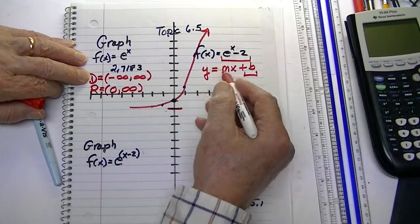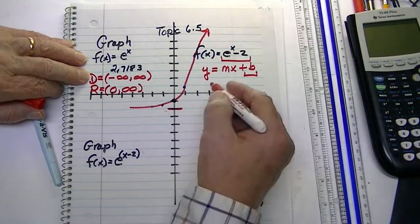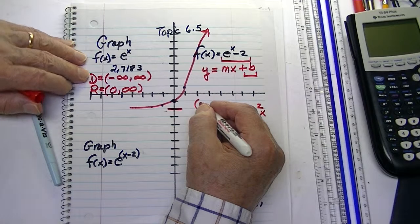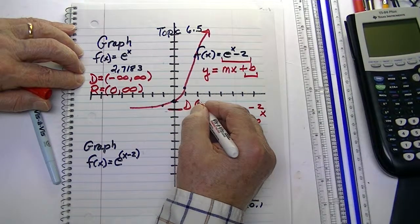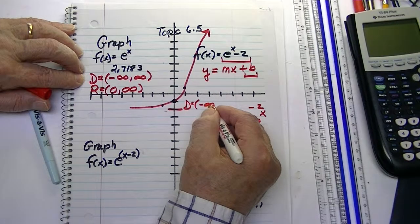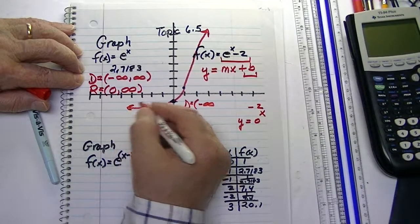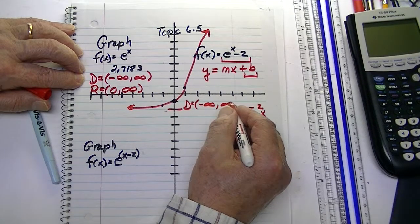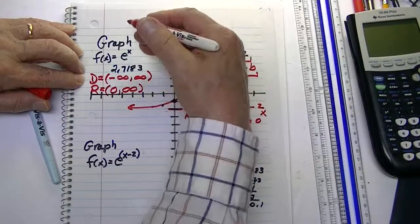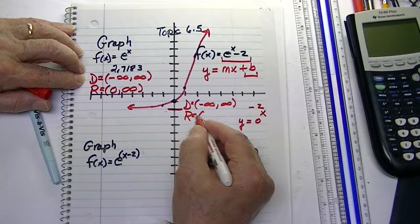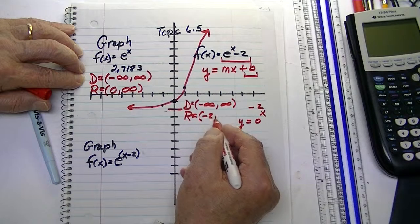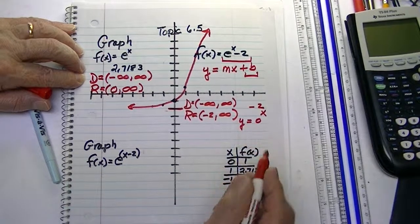So, what will be the domain of this one? Well, the range, let's just do domain first. Domain is going to equal from, again, negative infinity, because this goes on, to positive infinity. But now, our range has shifted down. So, it's just the other side of a negative 2 going up to positive infinity.